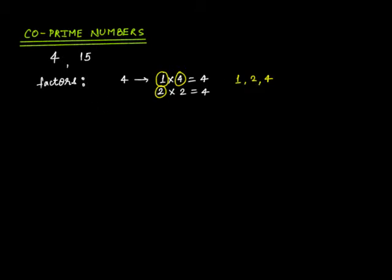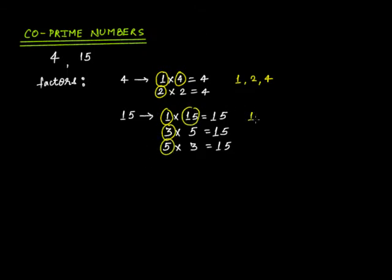Now what about the factors of 15. So factors of 15 will be 1 times 15 is 15, then you have 3 times 5 is 15, and you have 5 times 3 as 15. So the factors in this case are 1, 3, 5, and 15. These are the factors of 15.